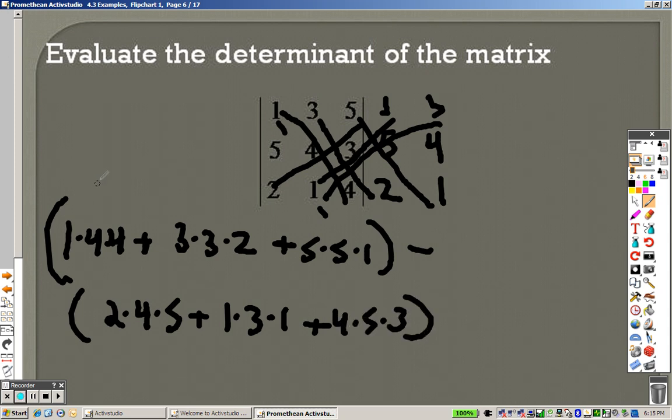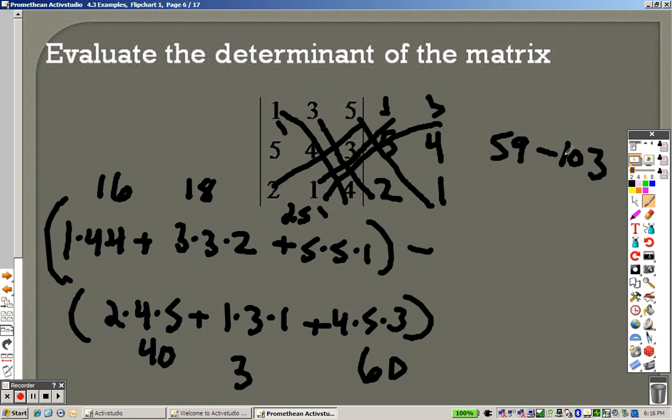And it's all of that minus 2 times 4 times 5 plus 1 times 3 times 1, plus 4 times 5 times 3. So, this is 16, 3 times 2 is 18, and that's 25. This is 40, plus 3, plus 60. So when we do this, it's 16 plus 18 plus 25. So it's really saying do 59 minus 40 plus 3 plus 60, which is 103. So, 59 minus 103 is negative 44.